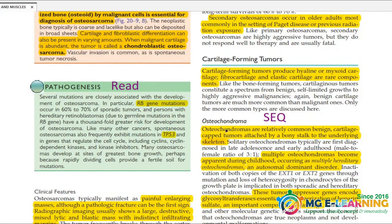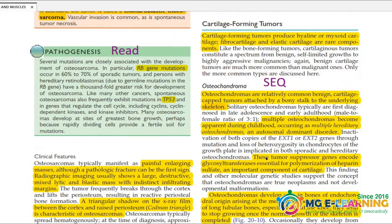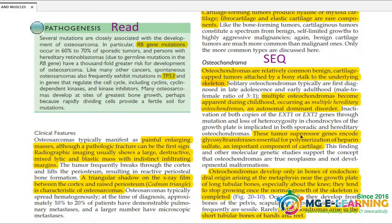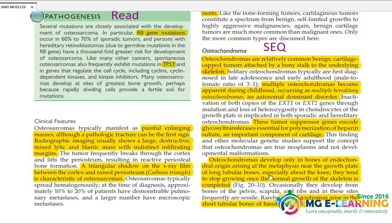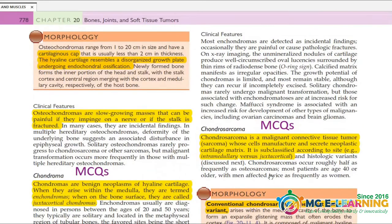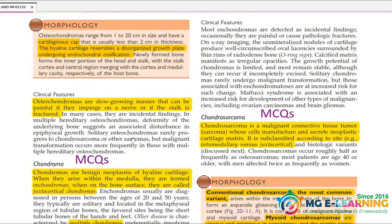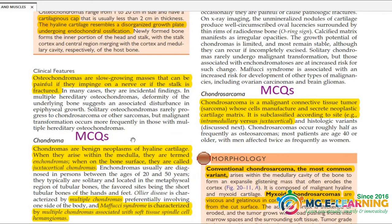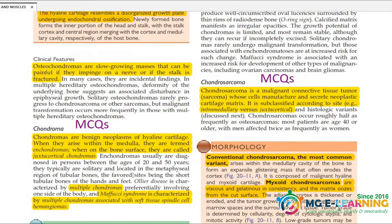Cartilage-forming tumors: osteochondroma — this is a good way to highlight the bone. Multiple chondroma, chondrosarcoma — malignant tumor.